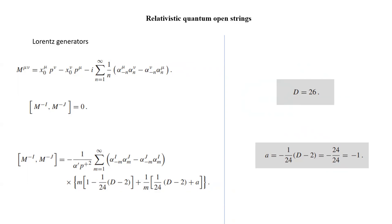We have generators which generate the symmetry, and here the Lorentz generators generate Lorentz symmetry. The Lagrangian is invariant with respect to Lorentz boosts and rotations — that is what Lorentz symmetry means.